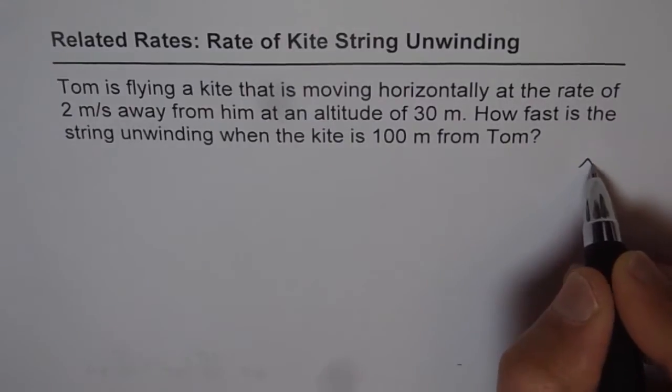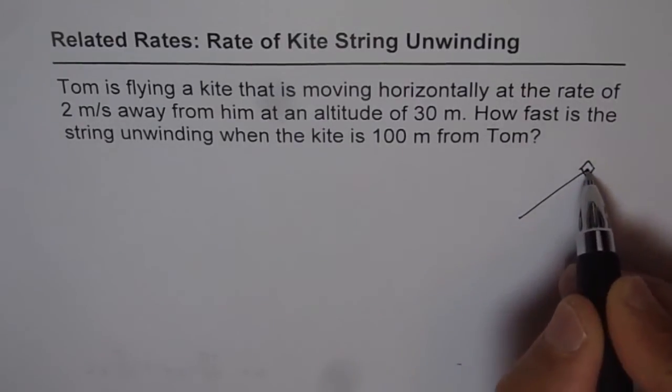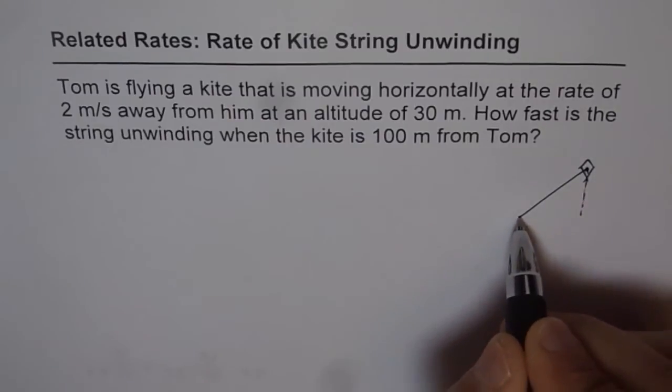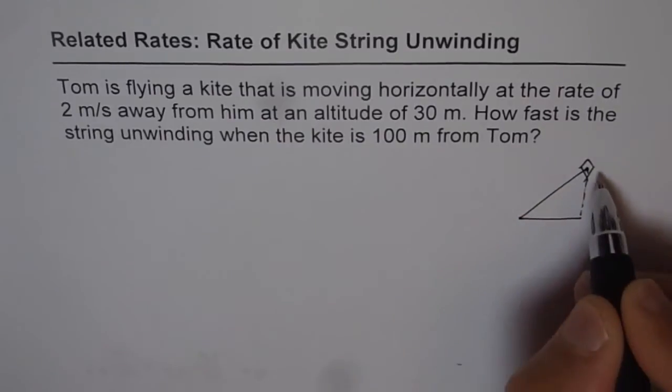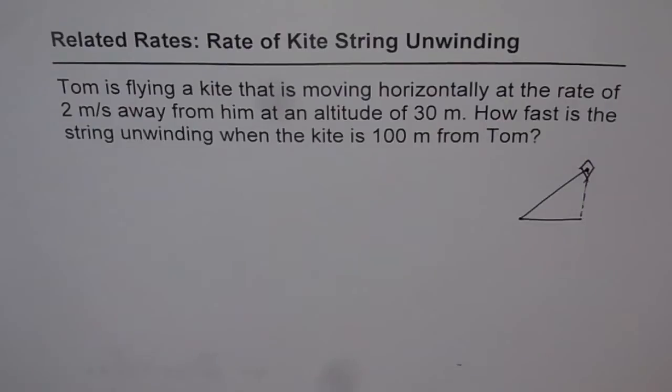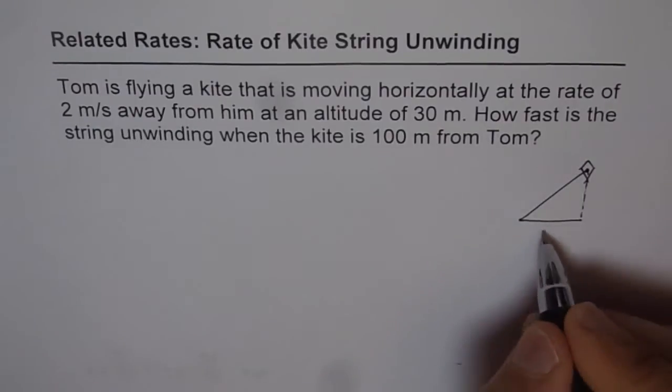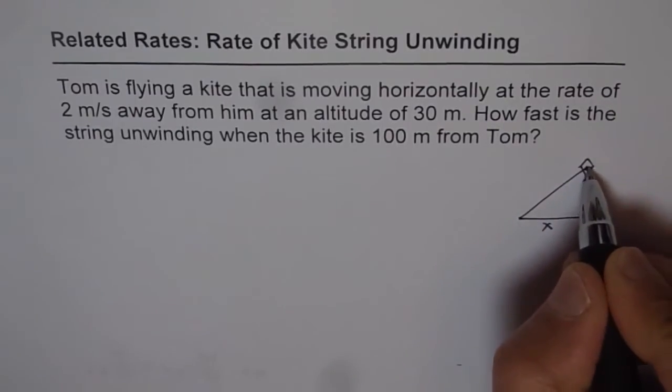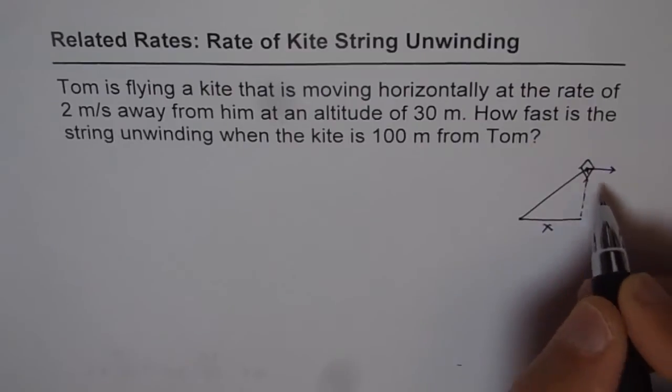So the situation is like this. Let's say this is the kite and it is some distance away like this, and the kite is actually moving horizontally away. Let's say horizontal distance is x, and the kite is moving horizontally away at an altitude of 30 meters.